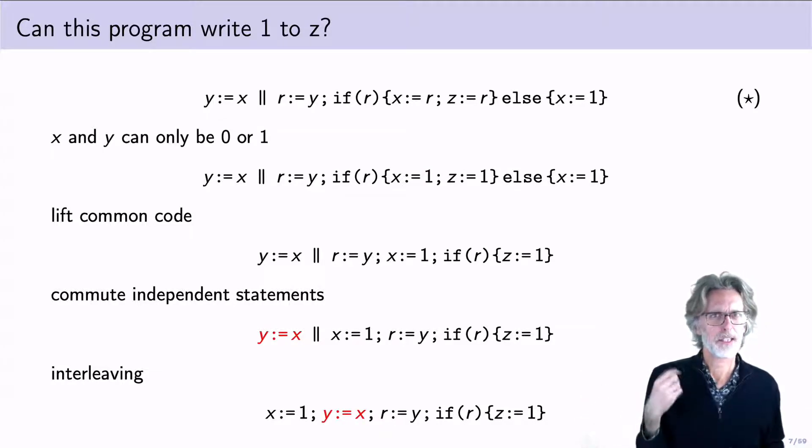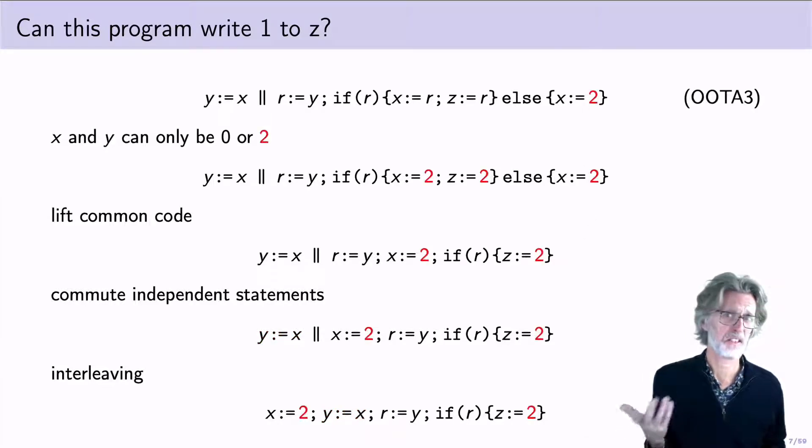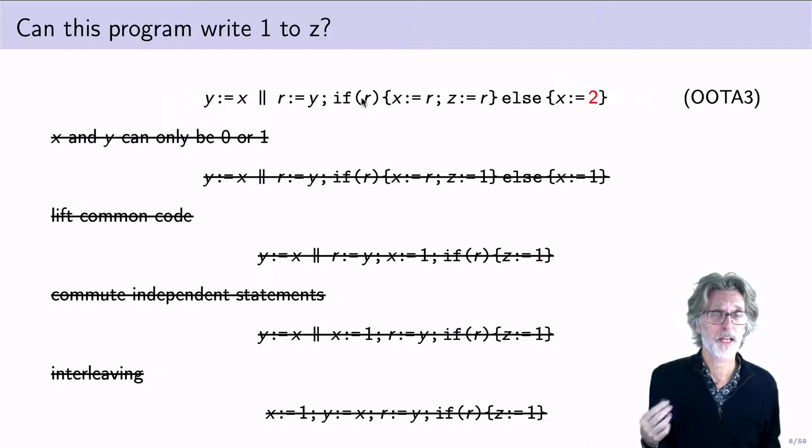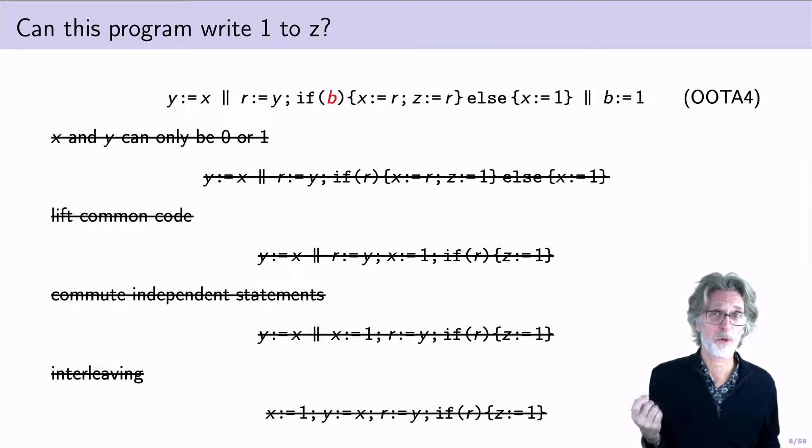This kind of thing is troubling, to say the least. But if I change x is 1 to x is 2, well, then obviously, this program can no longer write 1. And note that this first transformation is only valid because I've conditioned the execution on r. If I change that to a random coin flip, surely this is no longer valid.